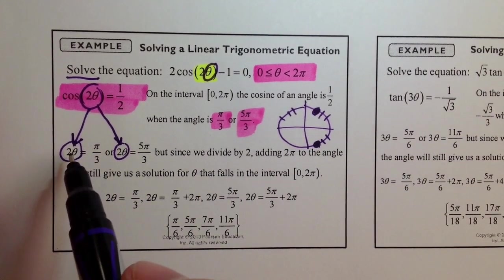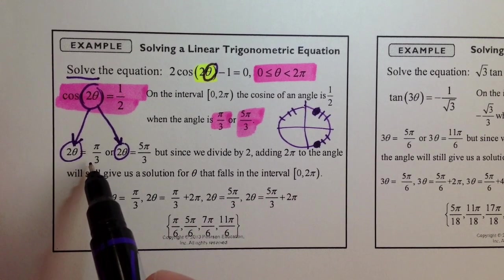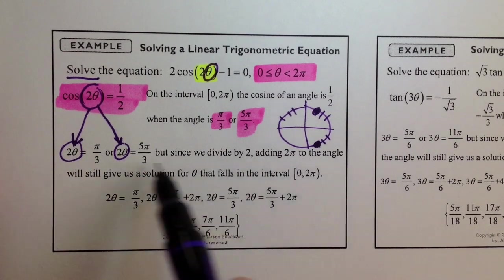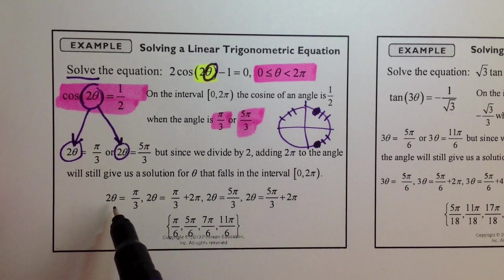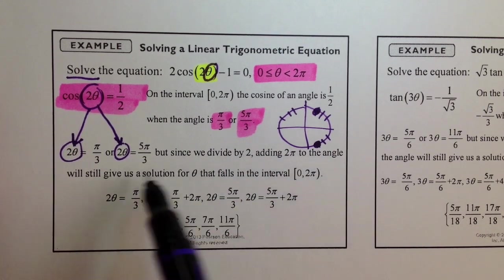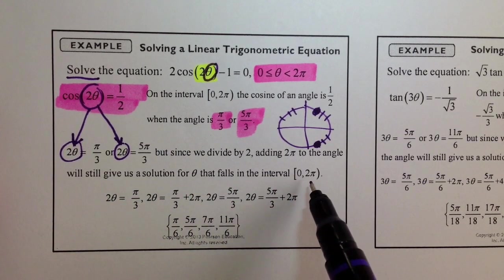Well, when we get 2 theta then is equal to pi over 3, we have to divide by 2, and I'm trying to read this at the same time. But since we divide by 2, adding 2 pi to the angle will still give us a solution for theta that falls in the interval from 0 to 2 pi.